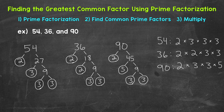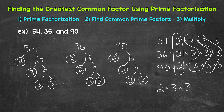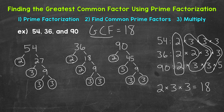Now that we have the prime factors listed, we need to look for common prime factors — factors that all three of these numbers share. 2 is a common prime factor. 3 is a common prime factor. And then we have another 3 in common. The common prime factors are 2, 3, and 3. Once we have those common prime factors, we multiply them to get the greatest common factor. 2 times 3 is 6, times 3 is 18. So the GCF — the greatest common factor of 54, 36, and 90 — is 18.